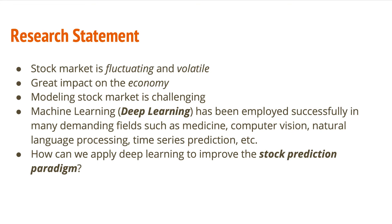The stock market refers to a public market that exists for issuing, buying, and selling stocks that trade on a stock exchange. We know that the stock market is fluctuating and volatile. It is the extent to which buying or selling moves the price against the buyer or seller — upward when buying and downward when selling. It has a great impact on the economy, and modeling of the stock market is always very challenging. That is why I identified this problem to work on it.